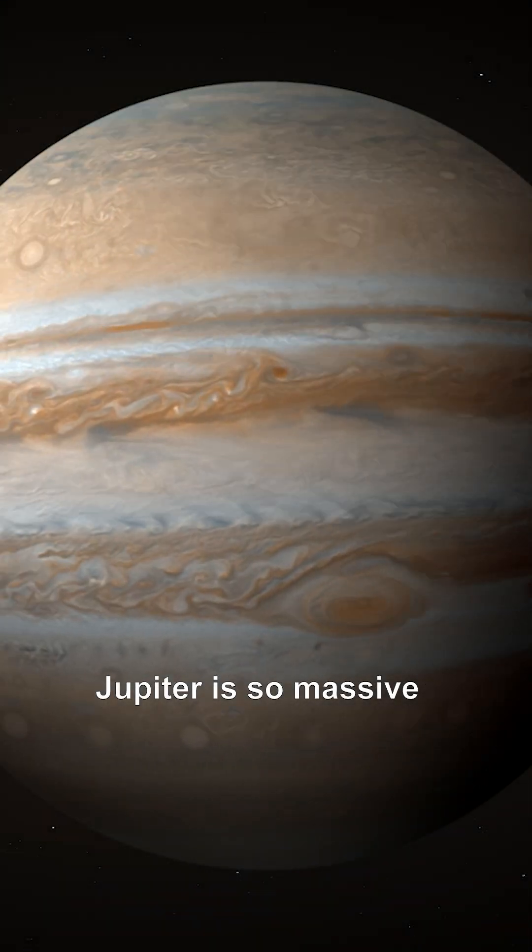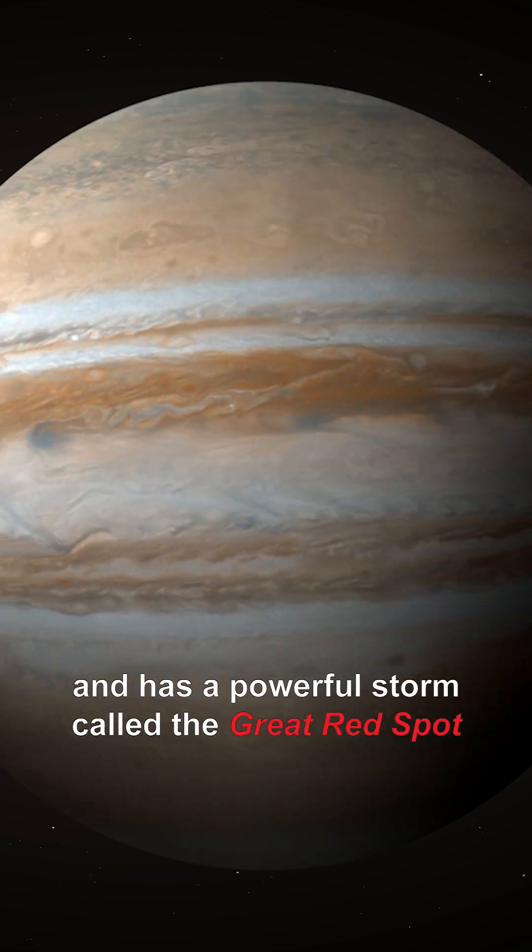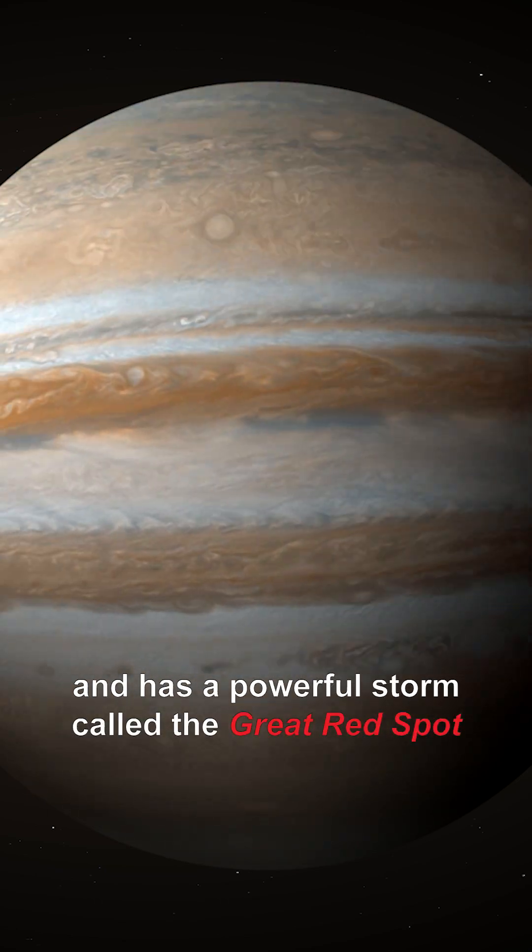Jupiter is so massive that it could hold more than 1,300 Earths inside of it and it has a powerful storm called the Great Red Spot.